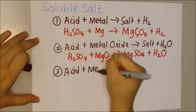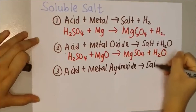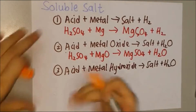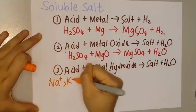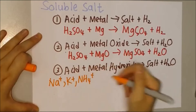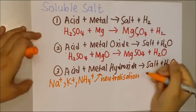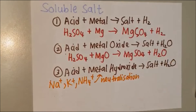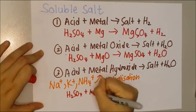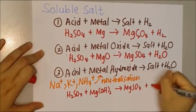The third type is acid reacting with metal hydroxide to form salt and water. For sodium, potassium, and ammonium salts, you can only prepare them through this neutralization method. For example, sulfuric acid reacts with magnesium hydroxide to form magnesium sulfate and water.